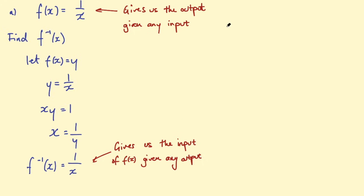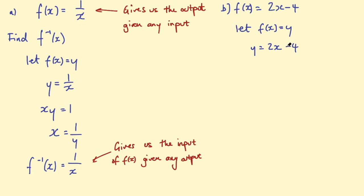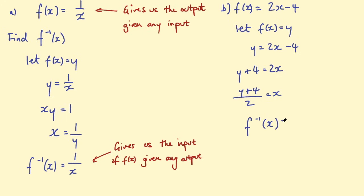Let's do one more example. You might be given the function f equals 2x minus 4 and be asked to find the inverse. Remember, the first step is to let f equal y, so y equals 2x minus 4, then rearrange for x. Add 4 to both sides: y plus 4 equals 2x, then divide by 2, giving x equals (y plus 4) divided by 2. Now y — the output — becomes the input x, so f inverse equals (x plus 4) divided by 2. That's the method you can use in all cases when asked for an inverse function.